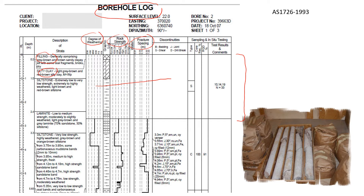Soil doesn't really have much weathering or fracture spacing. If you've seen my previous video, you will see that here we have 'S' which means a sample was taken at that depth, and in the column called 'test results' you will see numbers from the SPT test. If you still don't know what it means, please watch that video — I'll put the link in the description.